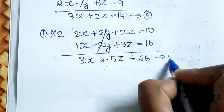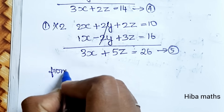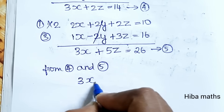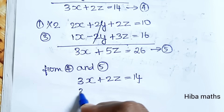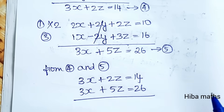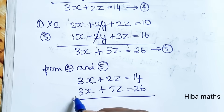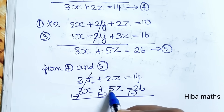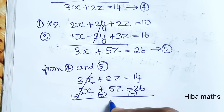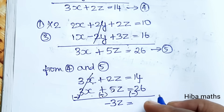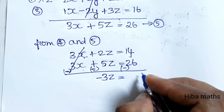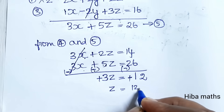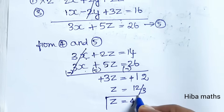This is the fifth equation. Now compare equations 4 and 5. Equation 4: 3x plus 2z equals 14. Equation 5: 3x plus 5z equals 26. Subtracting equation 4 from equation 5: the 3x terms cancel, giving 3z equals 12, so z equals 4.